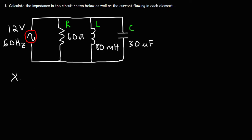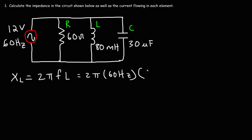The first thing we need to do is calculate the inductive reactance, which is equal to 2π times the frequency of the signal times the inductance. The frequency of our voltage source is 60 hertz, and the inductance is 80 millihenries, or 80 times 10 to the minus 3 henries. So that's going to be 2π times 60 times 80 times 10 to the minus 3, giving an inductive reactance of 30.16 ohms.